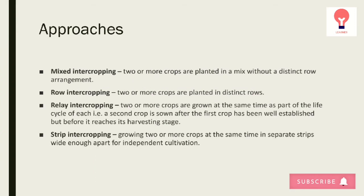There are mainly four approaches: mixed intercropping, row intercropping, relay intercropping, and strip intercropping. In mixed intercropping, two or more crops are planted in a mix without any distinct row arrangement. In row intercropping, there is a distinct row. In relay intercropping, two or more crops are grown at the same time as part of the life cycle of each.